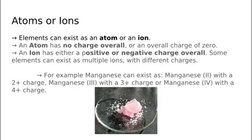Elements can exist as an atom or an ion. Today we are talking about atoms. An atom has no charge overall or a charge of zero, whereas an ion has either a positive or negative charge overall. Some elements can exist as multiple ions with different charges.